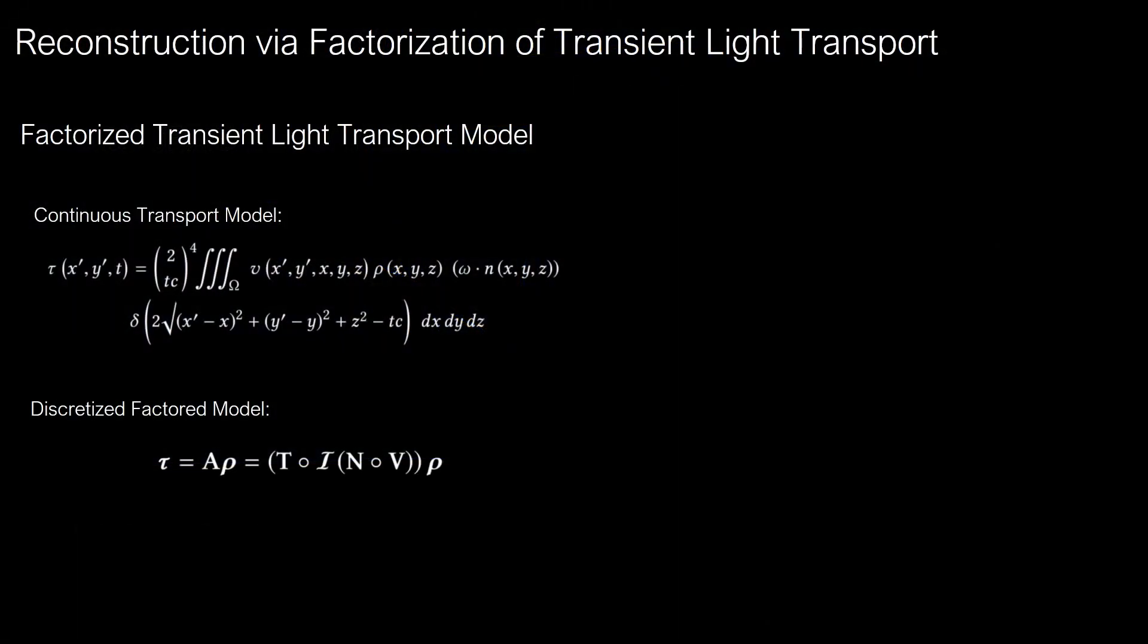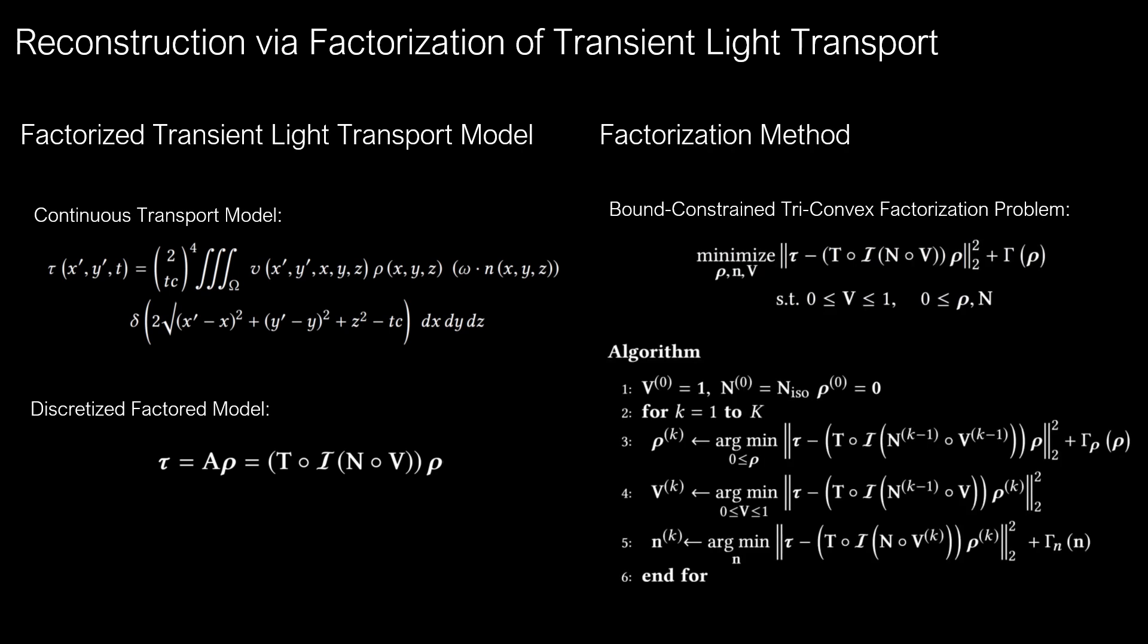We introduce a factor nonlinear image formation model that accounts for these partial occlusions via visibility and surface normal terms. We derive a tri-convex solver that factorizes the measured transient light transport into albedo, visibility, and normal components. Please see the paper for details.